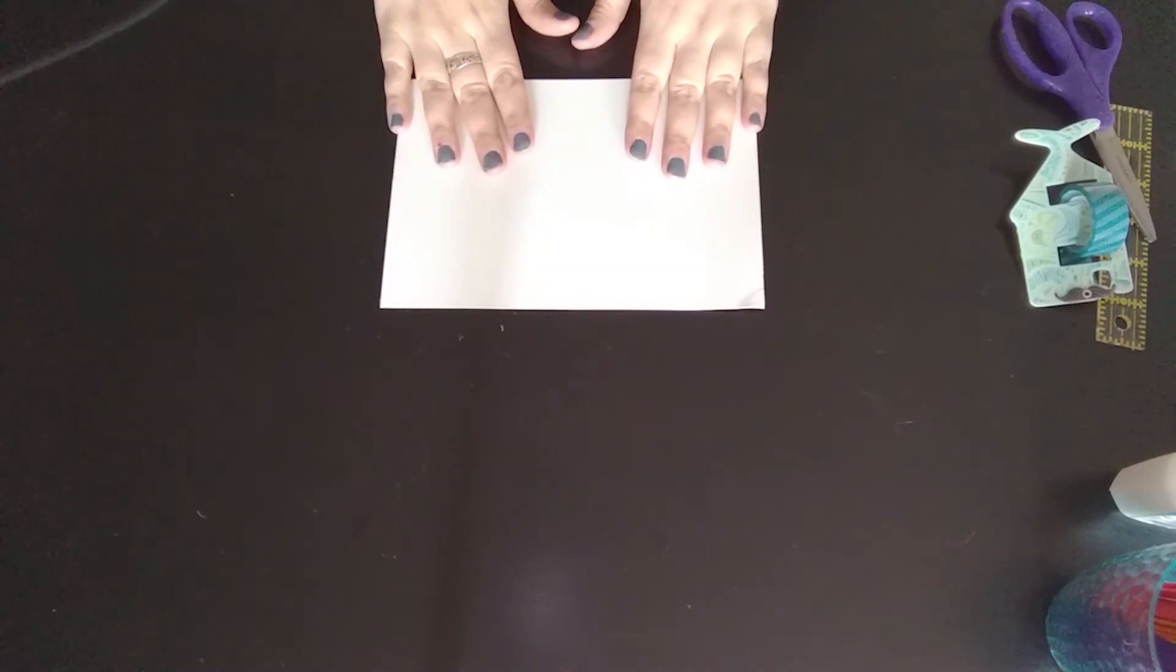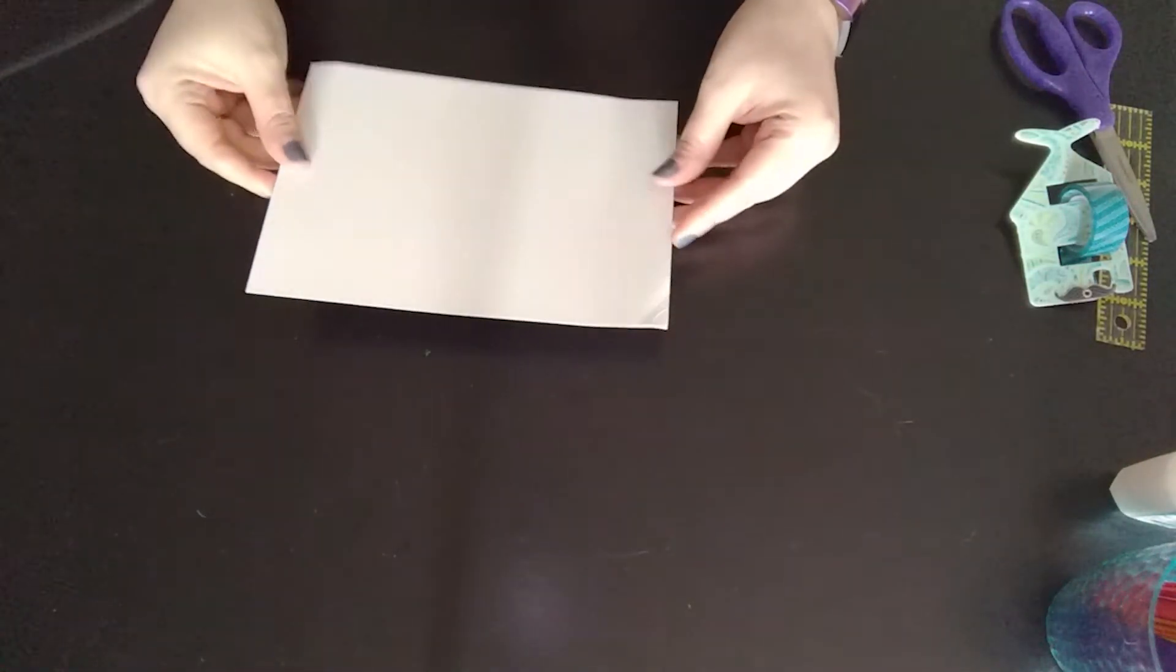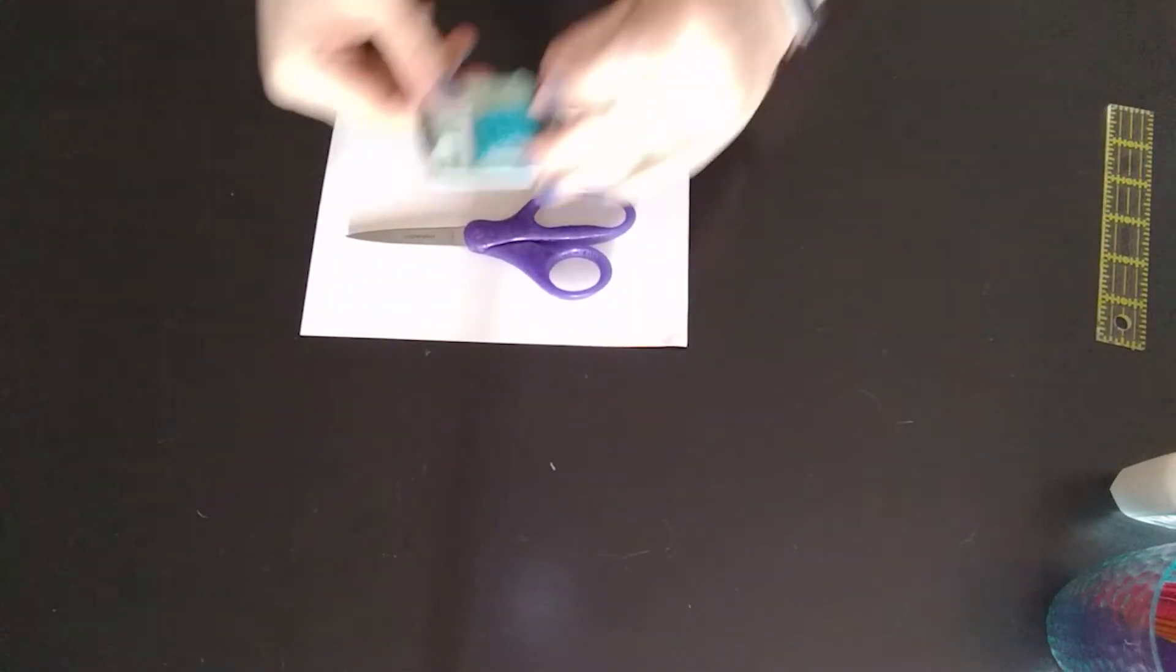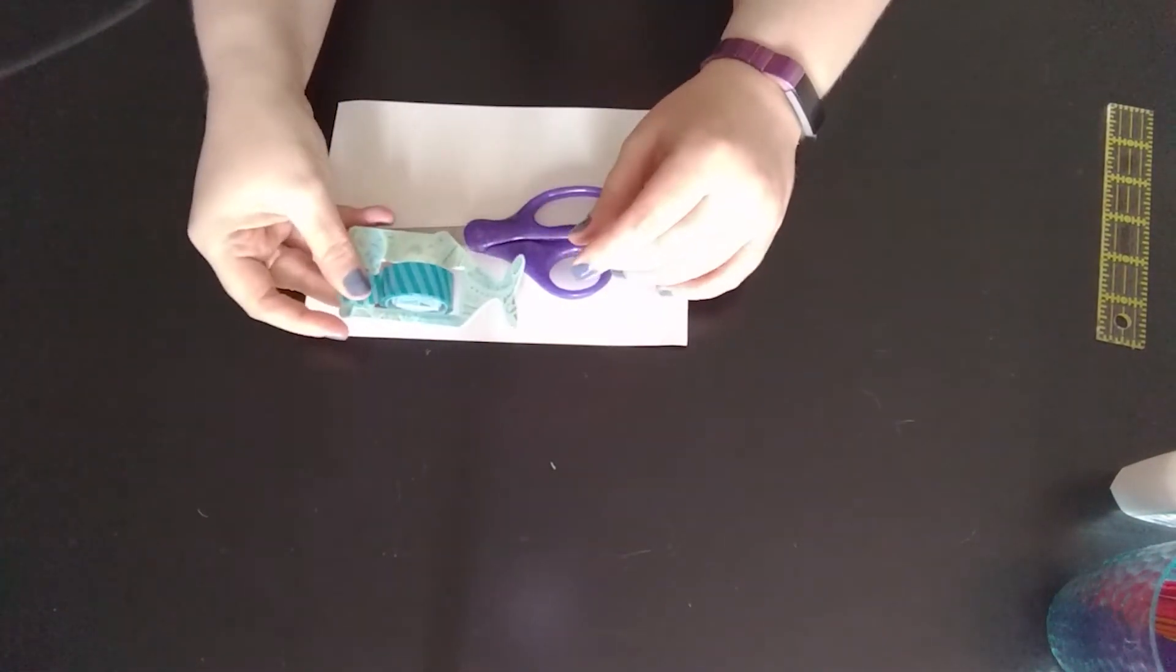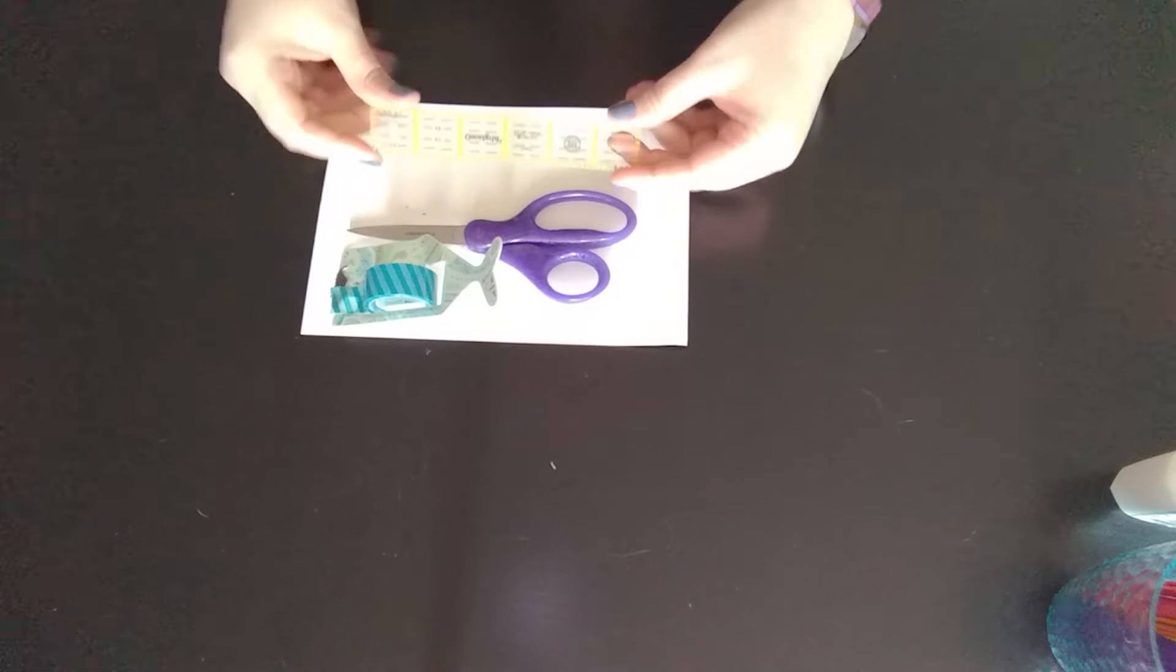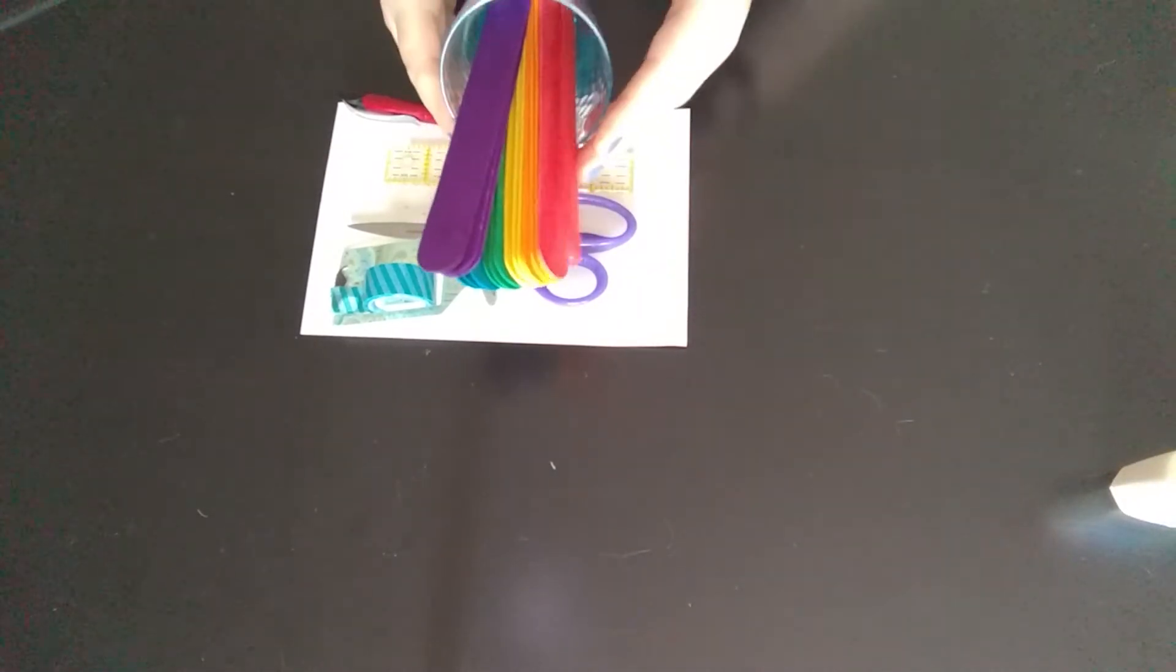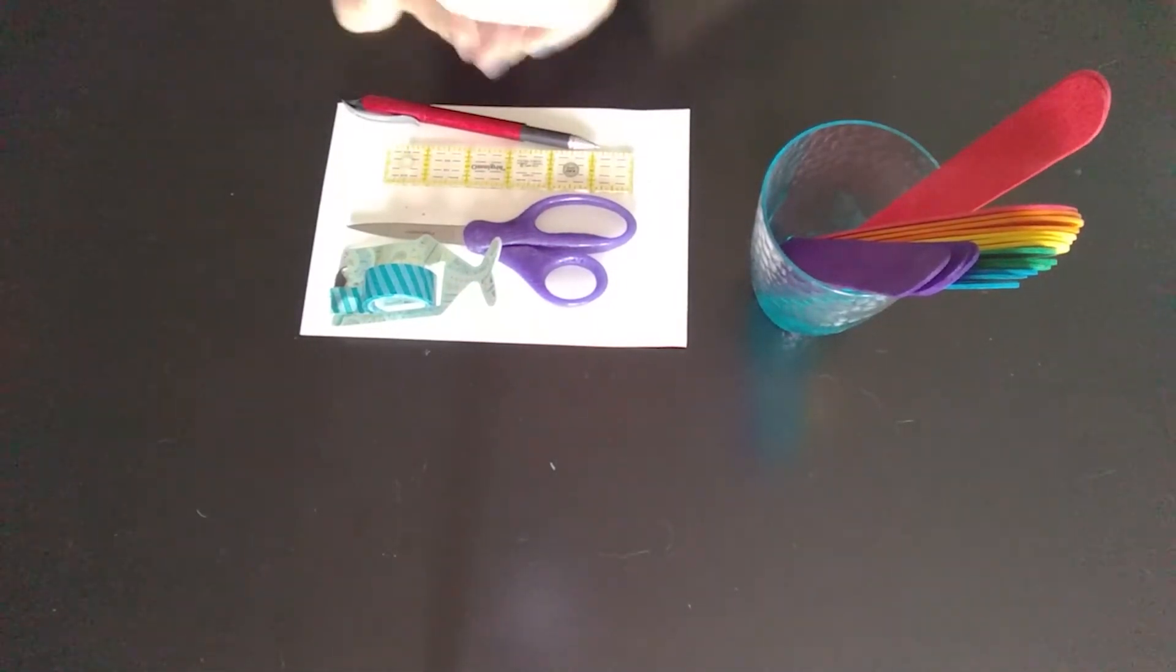So here's what we're going to be using today. We've got a piece of box board, the sort of thing that you would get from a cereal box or tissue box, some scissors, some tape. It can be plain tape, it doesn't have to be fancy or colored, scotch tape, masking tape, any sort of tape will do, a ruler, a pen, and you can also use craft sticks and glue.